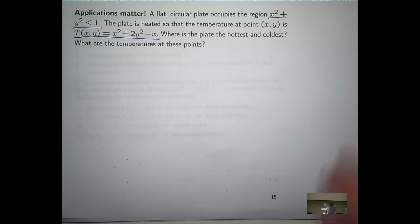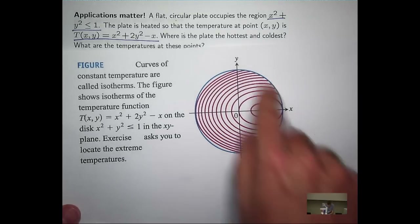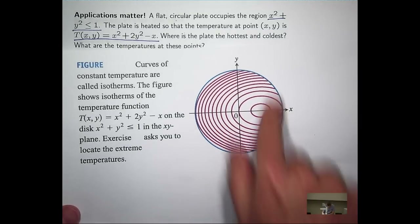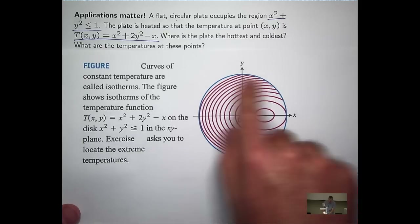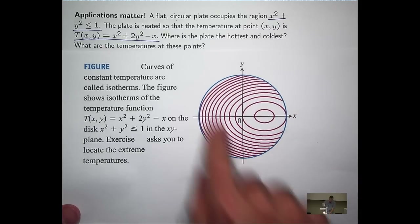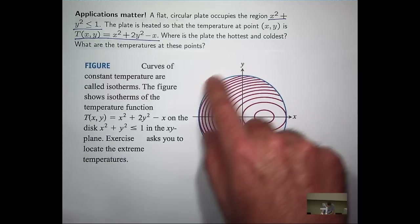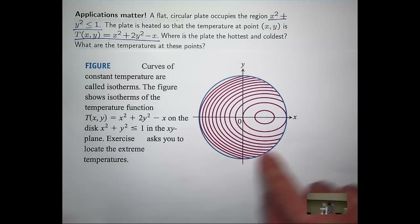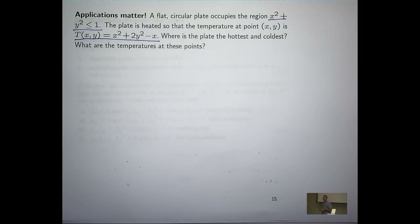It's a two-step process. What you do is try to apply the second derivative test inside the disk. So you want to test for critical points inside the disk, not on the edge, but inside. And then the second step of the process is that you just concentrate on the edge or the boundary of the disk and look for maxima and minima on the boundary.